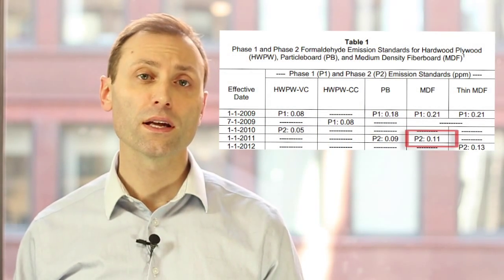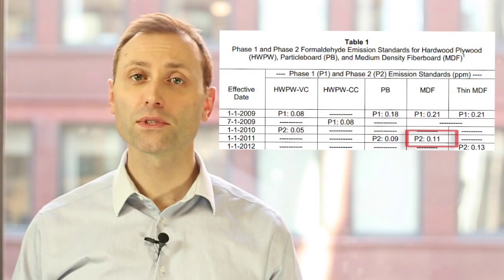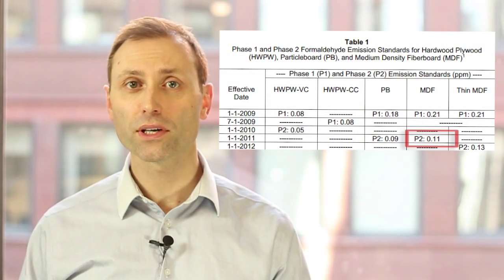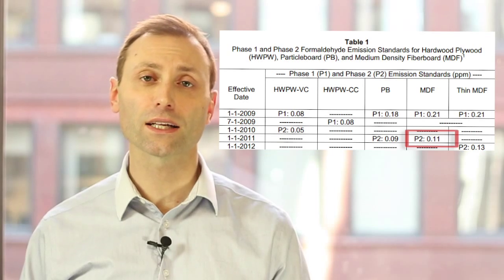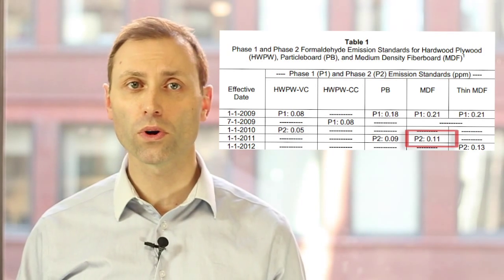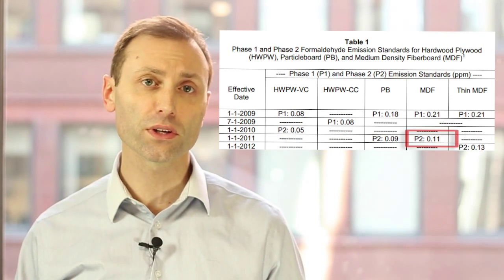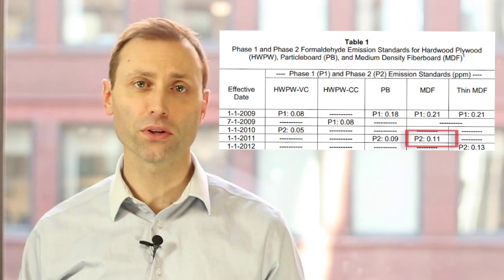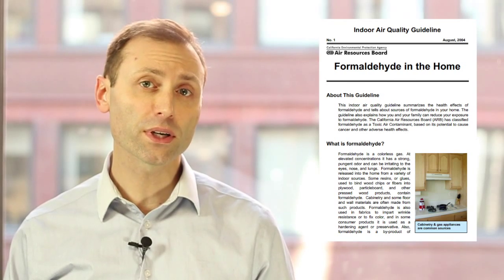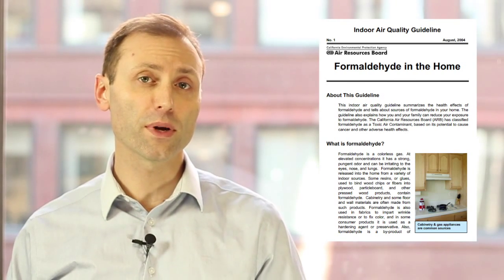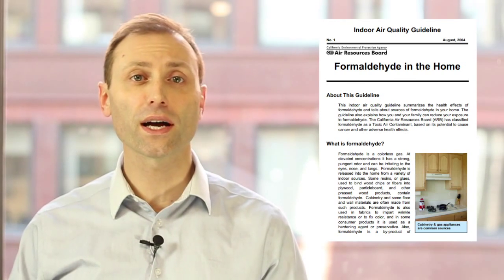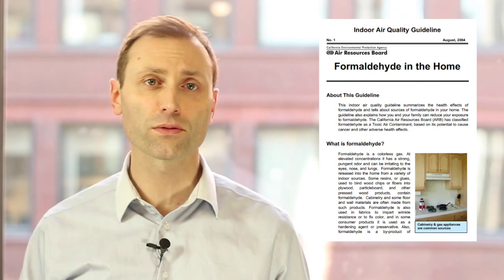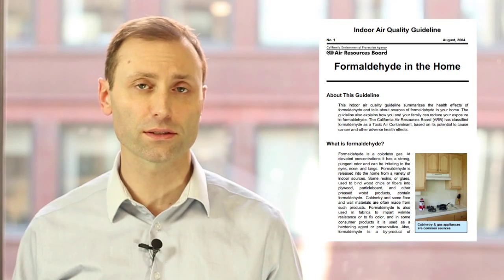The CARB Phase 2 requirement is for medium density fiber board emissions not to exceed 0.11 parts per million, or in other words, 110 parts per billion. The California Air Resources Board has a separate guideline for formaldehyde levels found in the general indoor air of residential buildings.